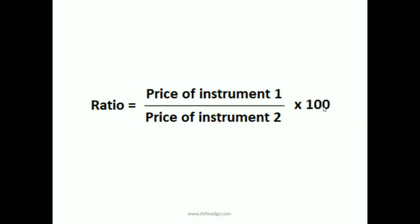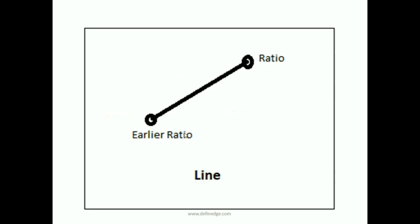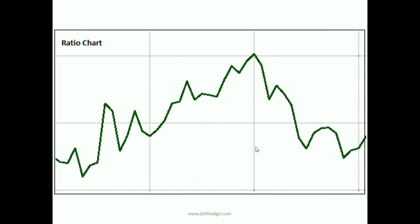Let me first explain ratio charts. If we divide the price of one instrument by the price of another and multiply it by 100, we get the ratio. For example, if price of Bank Nifty is 20,000 and Nifty is 10,000, and if I divide Bank Nifty by Nifty and multiply by 100, I get ratio 200. We can calculate the ratio of two instruments on a daily basis, connect them, and draw a ratio chart. It looks like a line chart but it is a ratio of two instruments. The price level is not important — the trend of the ratio is important.